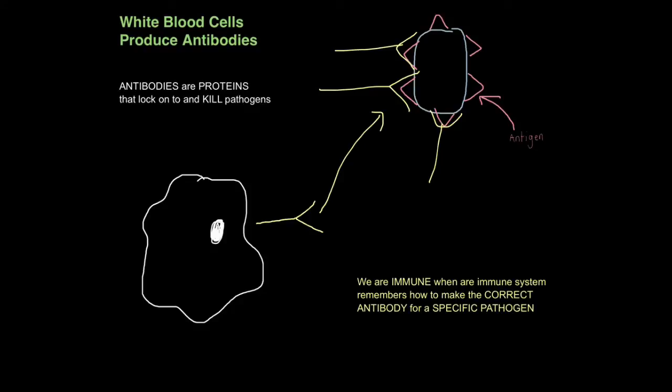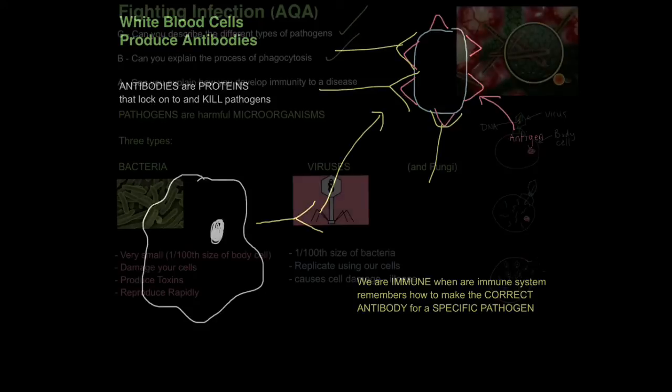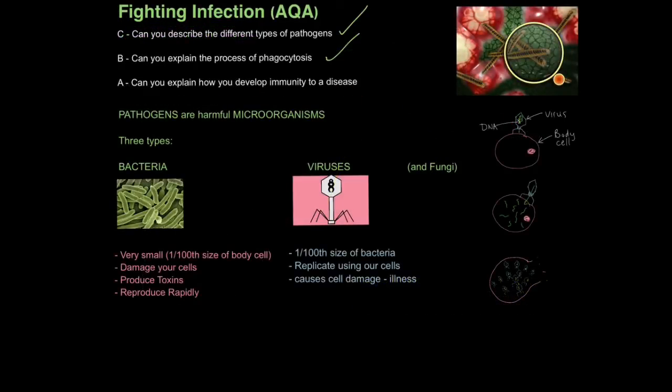So now that we've destroyed the pathogens and we're healthy again, some of the white blood cells, called memory cells, will actually remember how to make that specific antibody. So if we're ever infected by the same type of pathogen, very quickly we can rapidly produce many copies of this antibody to clear the infection before we start feeling ill. When this happens, we are immune to a specific disease. We are immune when our immune system remembers how to make the correct antibody for a specific pathogen. And that is how you develop immunity to a specific disease.